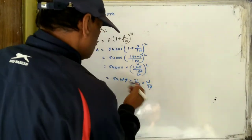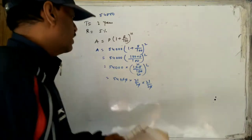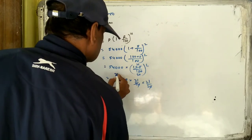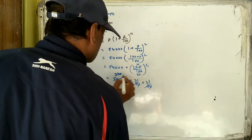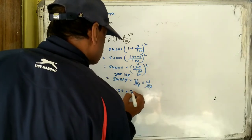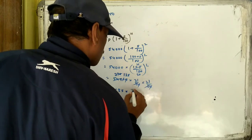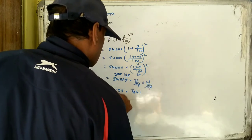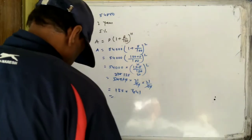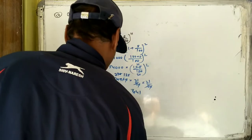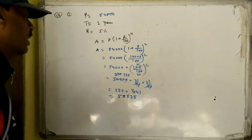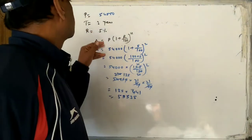After cross-cancellation, we get: X equals 54,000 into 20 into 20 divided by 21 into 21, which is 54,000 into 400 divided by 441. Simplifying this calculation gives us the population in 2001. The answer comes out to approximately 48,980 — so the population of the place in 2001 can be calculated this way.